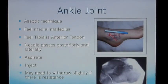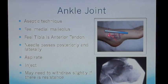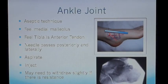If you're going to inject into the ankle joint you need to use an aseptic technique. Feel the medial malleolus, feel the tibialis anterior, feel the joint line. Introduce the needle between the medial malleolus and the tibialis anterior and inject going backwards slightly and laterally. When you feel you're in the joint, aspirate to make sure you're not in a blood vessel, then give a small test injection. If it goes in easily, carry on injecting. If there's a lot of resistance, withdraw the needle slightly as you may be in cartilage.